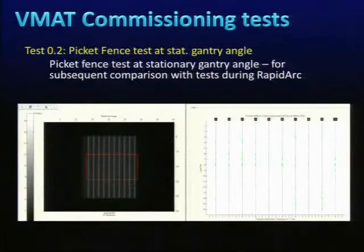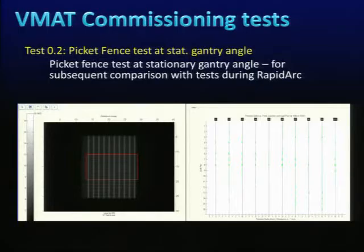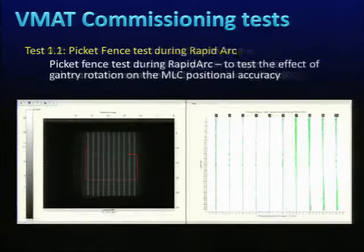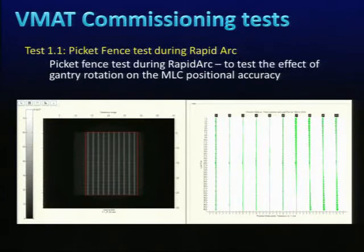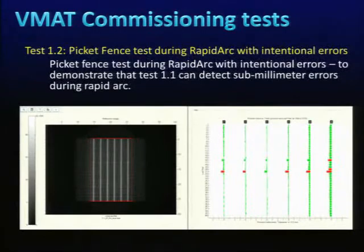The second test is a picket fence on stationary gantry angles, using EPID to profile and analyze MLC position accuracy. Software can display positional tolerance of ±1 mm — green indicates passing. Each MLC leaf is checked for the ±1 mm tolerance. During RapidArc delivery, the same picket fence test confirms ±1% tolerance passes for every leaf.